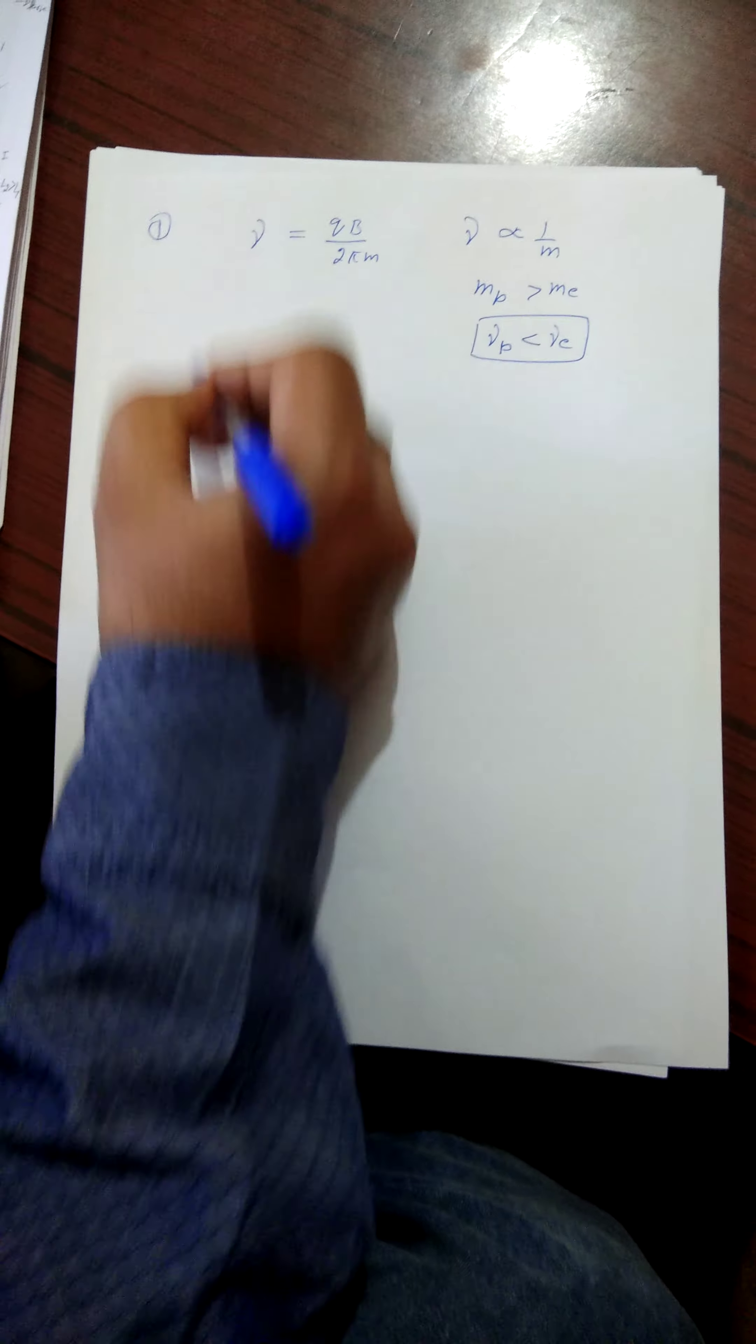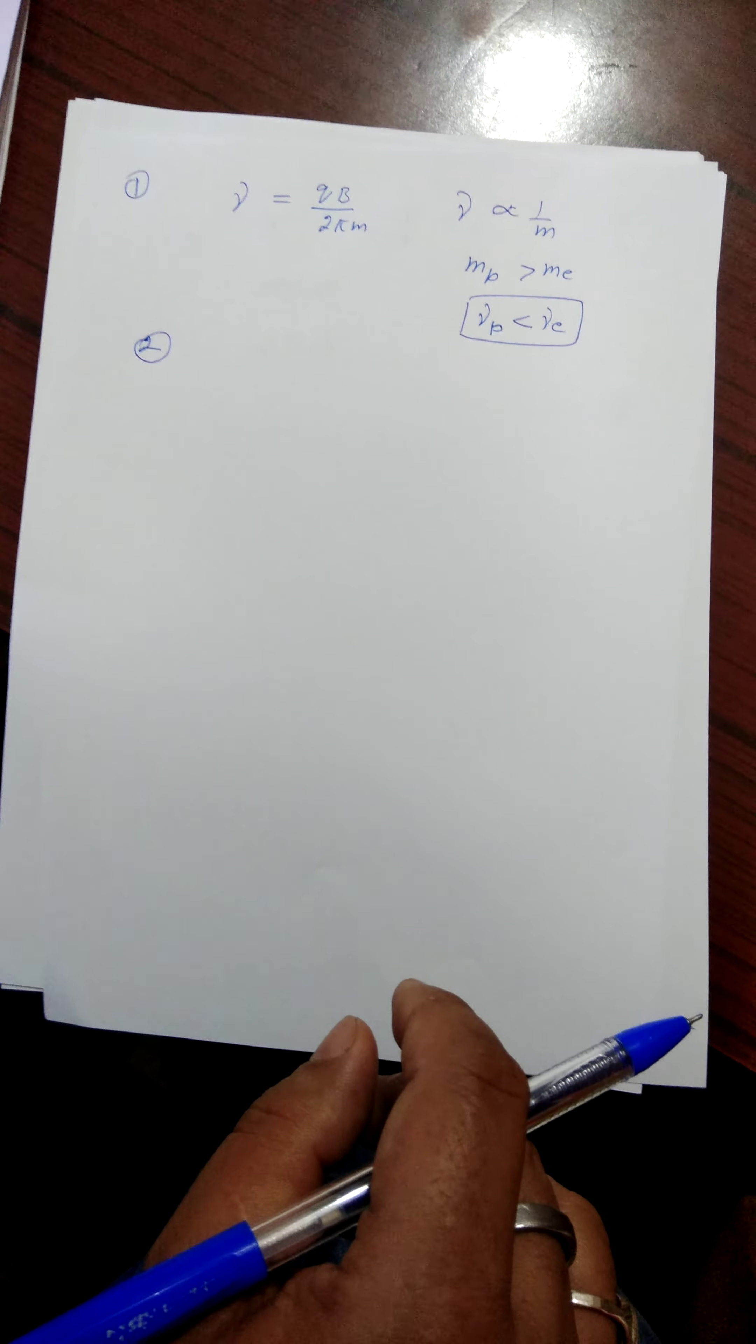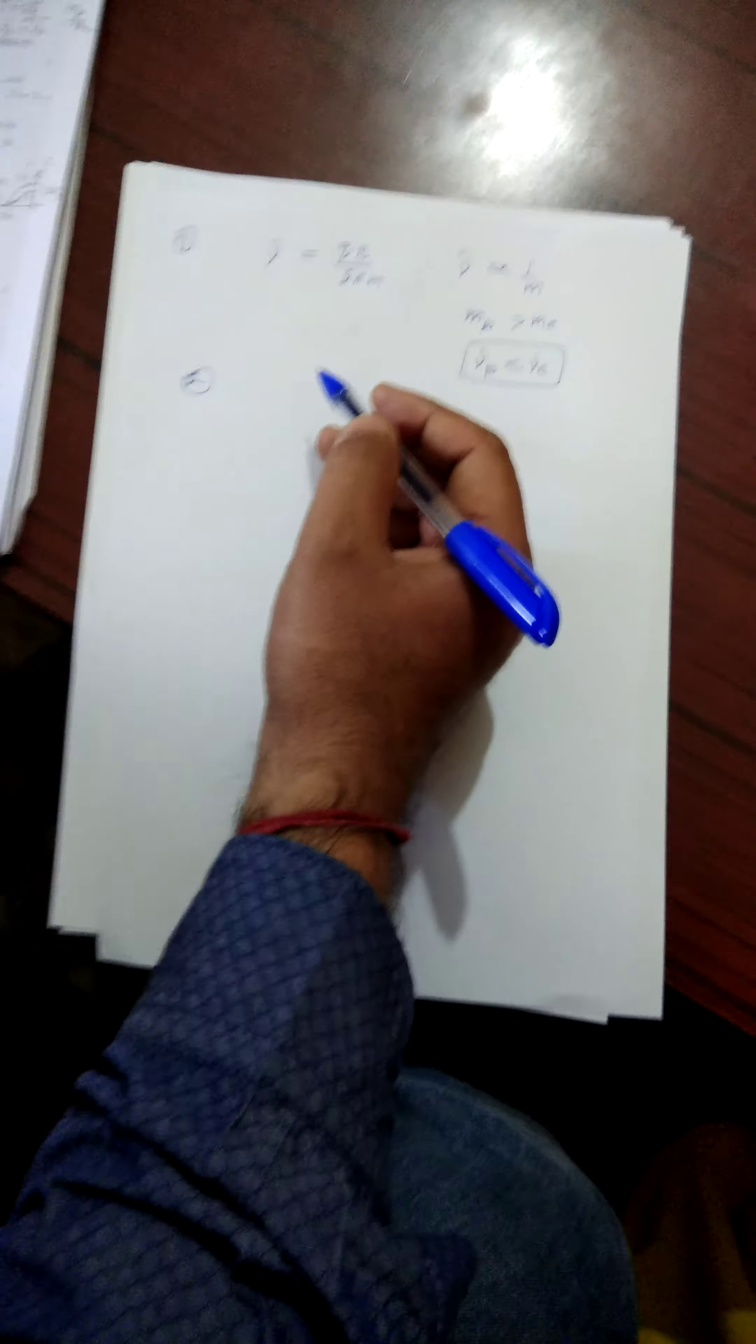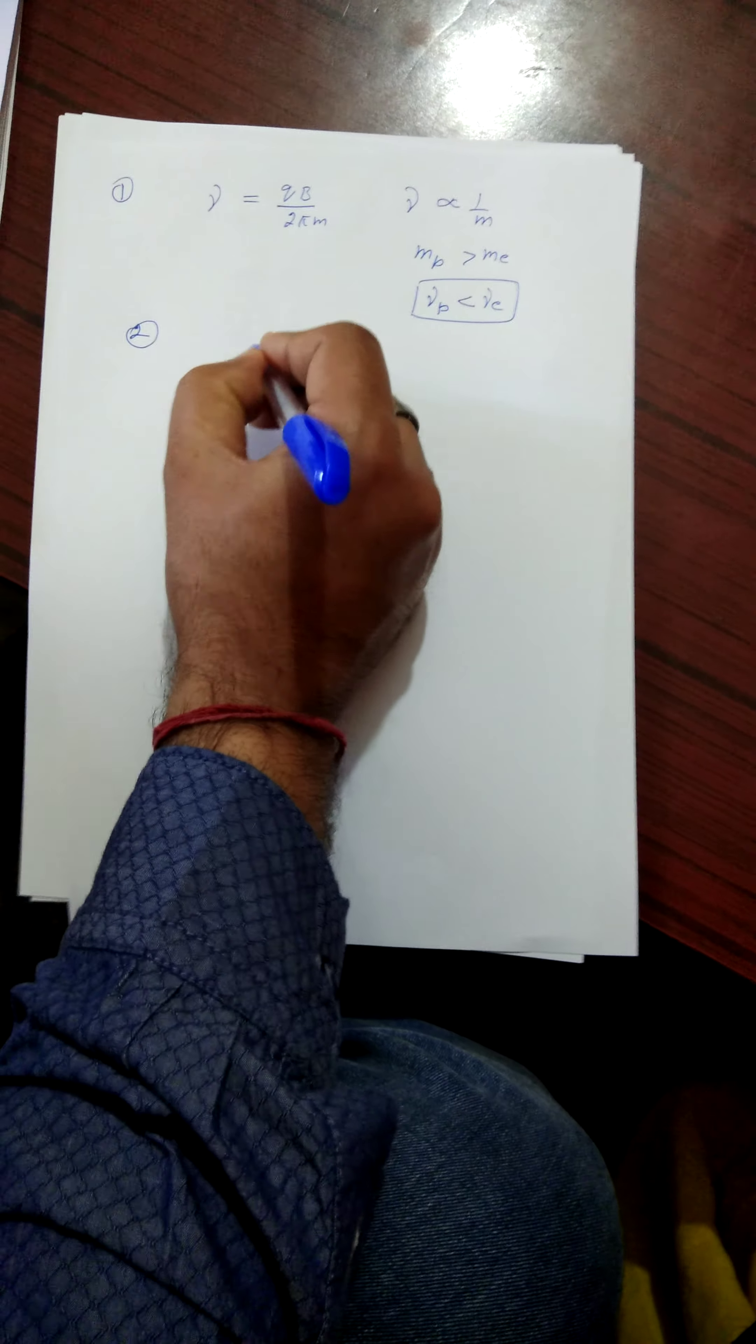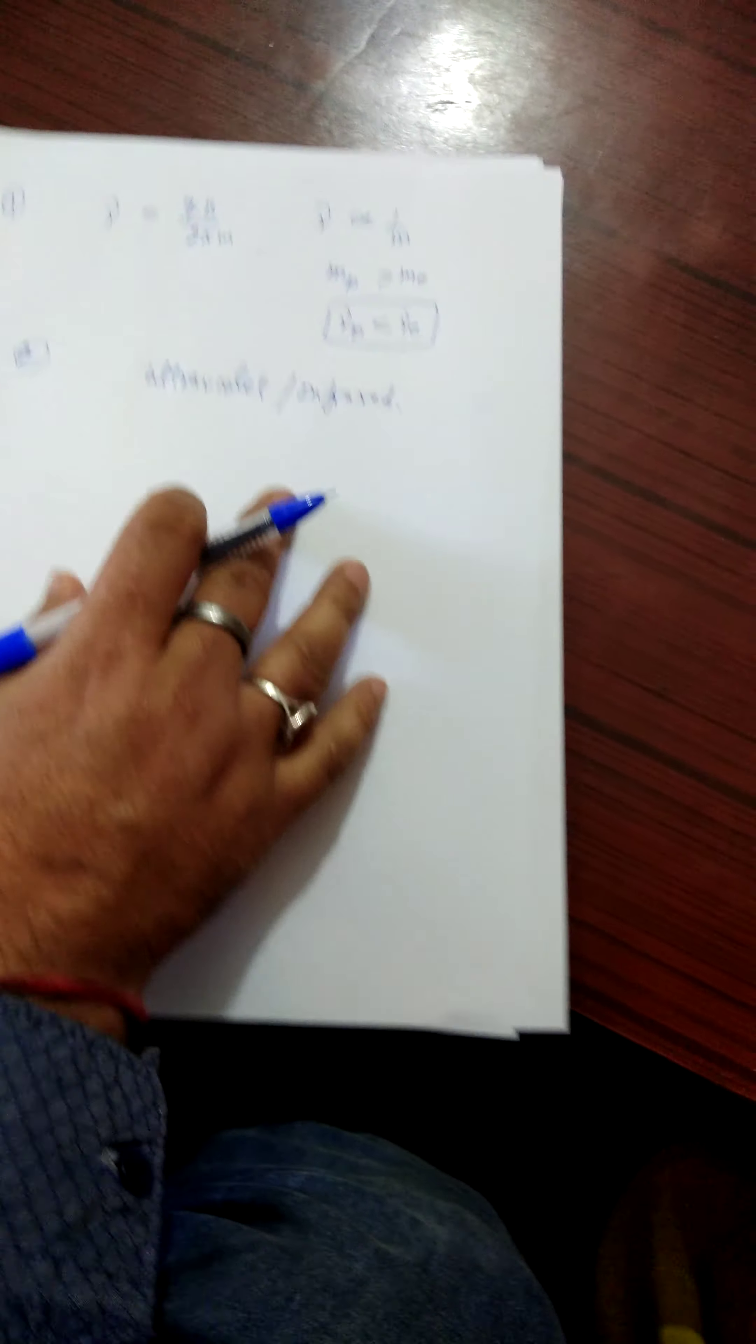Now see the second question. Name the electromagnetic radiations used for water purification and LASIK part eye surgery. So answer is ultraviolet and infrared because wavelengths shorter than the visible light. So this is the answer, that is ultraviolet, infrared.